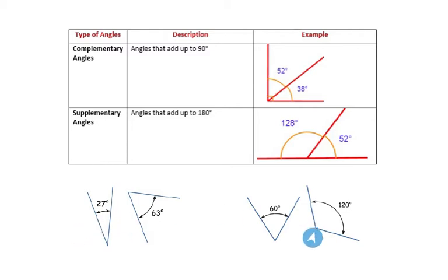Down here, we have some pictures of angles that are non-adjacent, or not right next to each other. In this first picture, if I were to find the sum of 27 and 63, that would add up to be 90 degrees. So even though these angles aren't next to each other, these are complementary angles. In this example over here, we have a 60 degree angle and a 120 degree angle. If I were to find the sum of 60 and 120, I would get a sum of 180, so I know that these are supplementary angles.